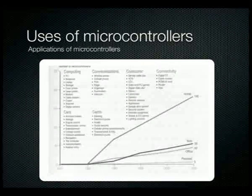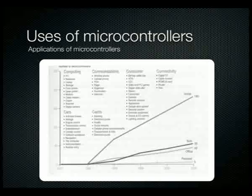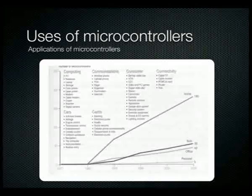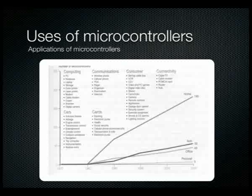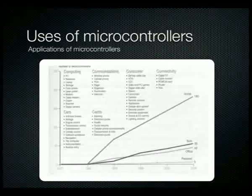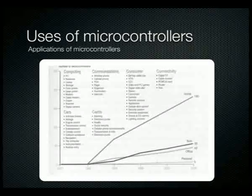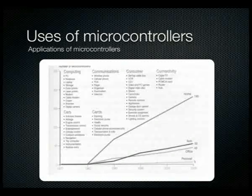The applications of microcontrollers have found their way inside everything. They're used extensively throughout computing and communications, ensuring the internet works at high and reliable speed. They're inside consumer electronics — microwaves, washing machines, VCRs, CD players, gaming consoles, cable TVs, routers, and hubs. They're also inside cars.